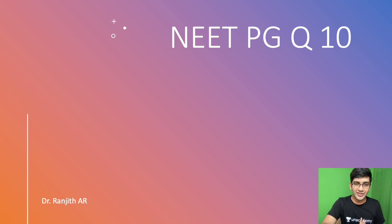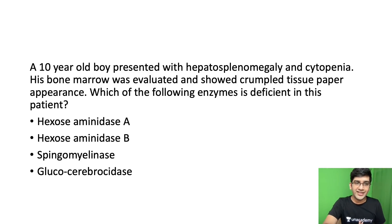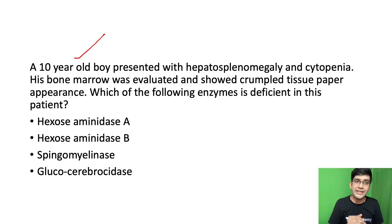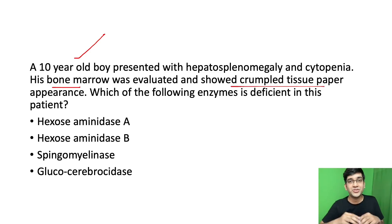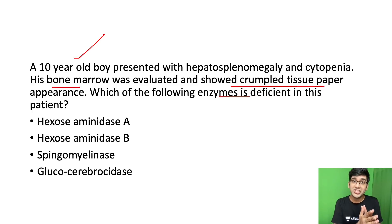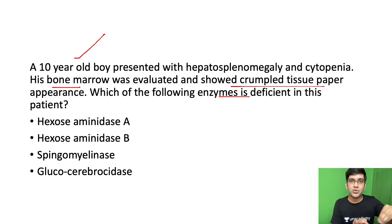This question is kind of a link between many subjects. It has a link with pediatrics — we can look at it from a pediatric point of view. A young kid coming with hepatosplenomegaly and cytopenias, bone marrow involvement showing a classical appearance explained from a pathological point of view, and an enzyme which must have been discussed in detail from a biochemistry point of view.